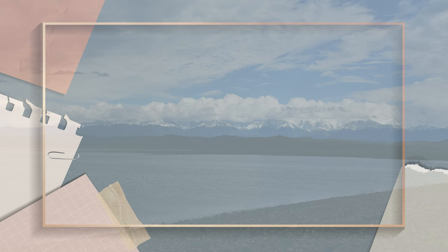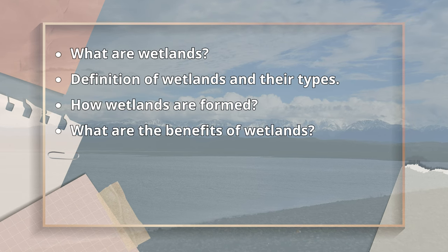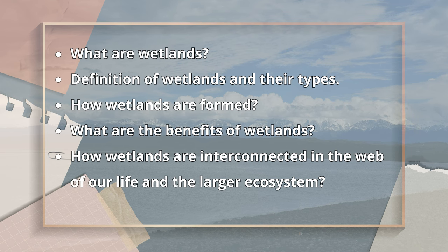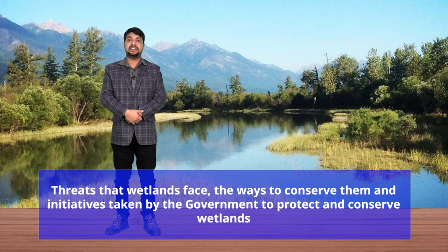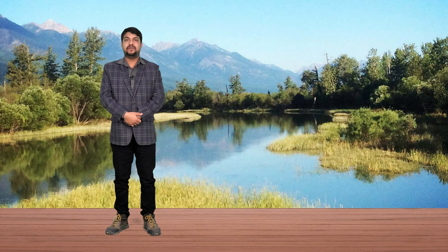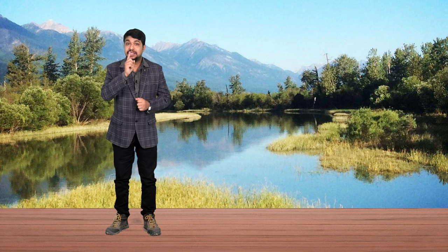You have learnt about the various aspects of wetlands, including what are wetlands, their definition, types, how they are formed, what are the benefits of wetlands, and how wetlands are interconnected into the larger web of life and ecosystem. You also learnt about the threats that wetlands face, the ways to conserve them, and initiatives taken by the Government of India. Follow-up exercises include naming the various ministries and associated schemes being implemented for wetland conservation, and identifying the Ramsar site closest to you and listing the criteria it fulfills for Ramsar designation.